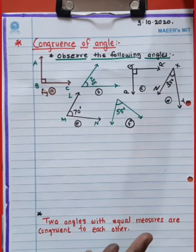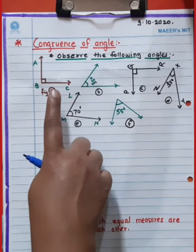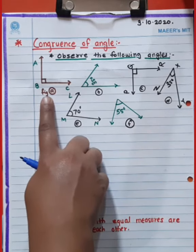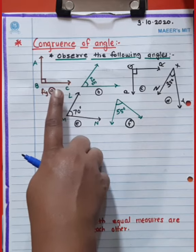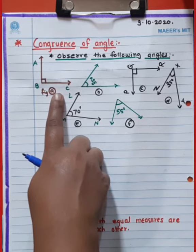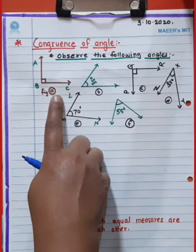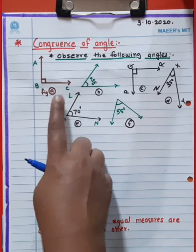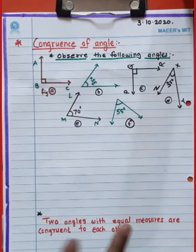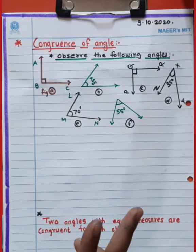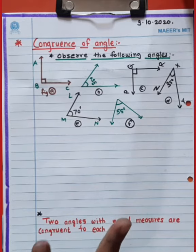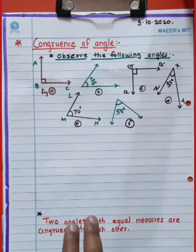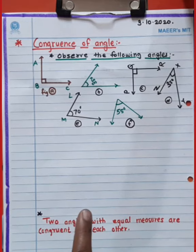When two given angles have equal measurements, at that time these two angles are congruent to each other. It means that when the equal measurements of given angles are equal, those two angles are congruent.